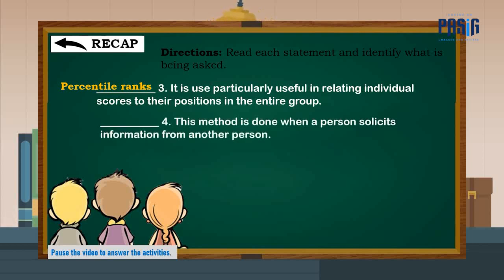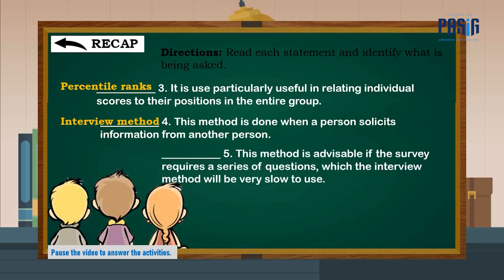Number four: this method is done when a person solicits information from another person. The correct answer is interview method. Number five: this method is advisable if the survey requires a series of questions which the interview method will be very slow to use. The correct answer is questionnaire method.